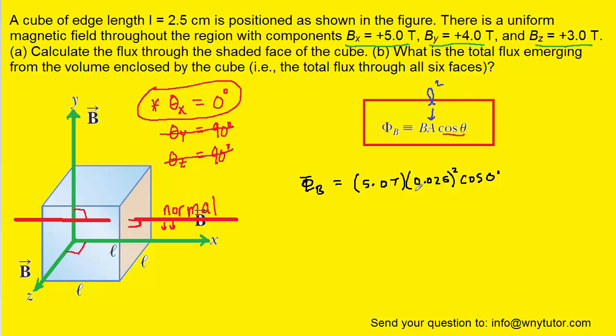With that idea in mind we can plug into the formula. Notice that we converted L into meters. The question gave L in centimeters and to convert that into meters we take the decimal point and move it over twice. So we have 0.025 meters and that's what we've plugged in for L. Plugging this into the calculator we can see that the magnetic flux through the shaded face of the cube will be 3.1 times 10 to the minus 3 and the unit of flux is Webers. So that is the correct answer to part A.